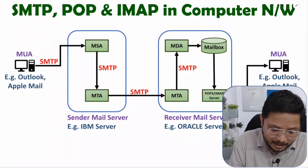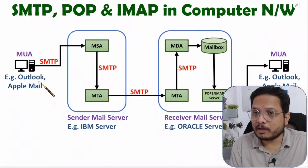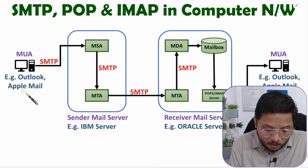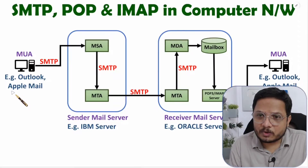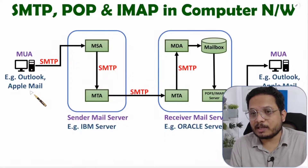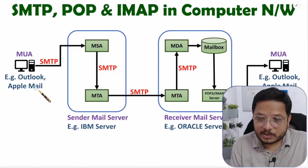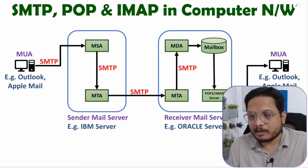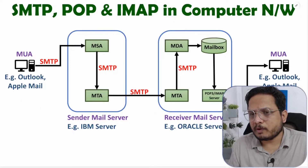For example, you can observe that this computer is having Microsoft Outlook application for email services. If you have a Mac operating system, you can have the Apple Mail application in your system. With these applications we can forward email as well. In corporates you will be observing that these applications are used for email forwarding.